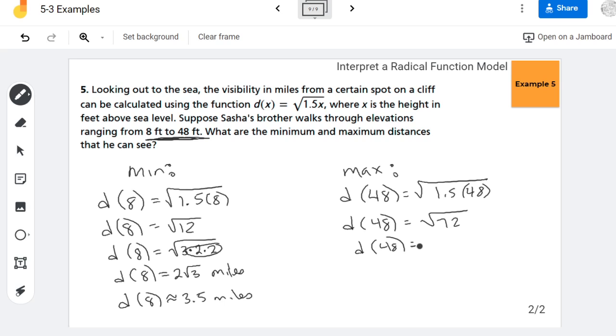And then I'm breaking up 72, I'm doing a factor tree in my head. I know that 72 is 9 times 8. So 9 is 3 times 3, and 8 is 2 times 2 times 2.